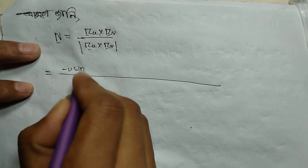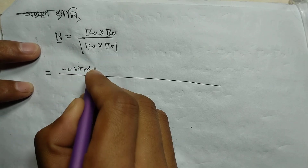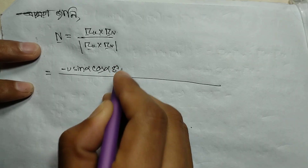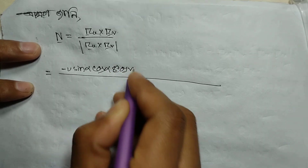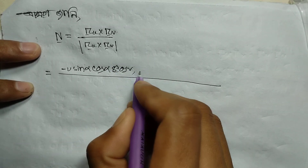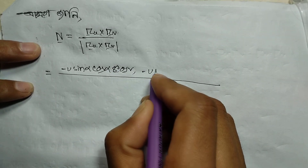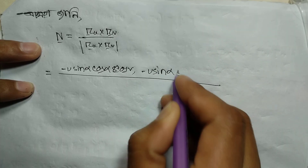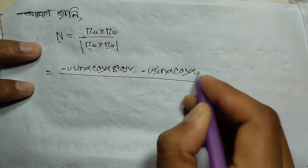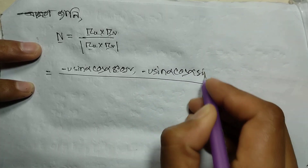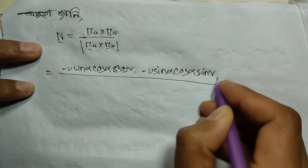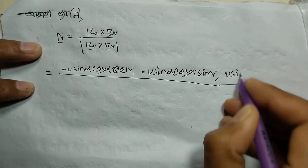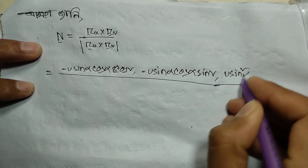The final normal vector n has components: u sinα cosα cosv, u sinα cosα sinv, and u sine squared alpha.